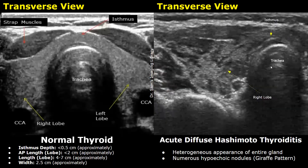This image is focused on the right lobe of the thyroid. Numerous hypoechoic nodules are present and the thyroid lobe has a heterogeneous appearance. This type of appearance, along with the abnormal lab tests shown earlier, indicates Hashimoto thyroiditis.